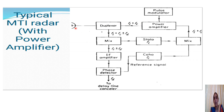On reception of the echo signal, a Doppler frequency shift will be introduced. Depending on whether the target is moving away from or toward the radar, the sign of the Doppler frequency shift will vary.